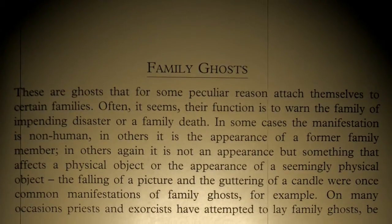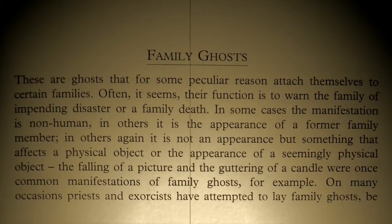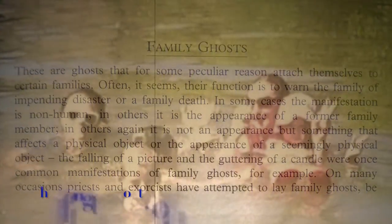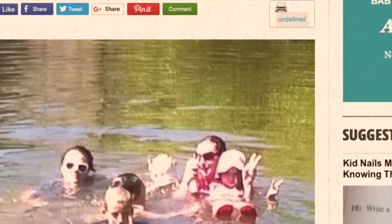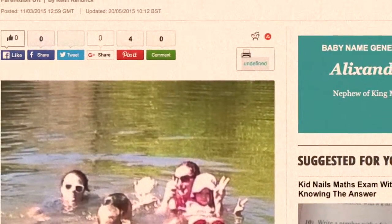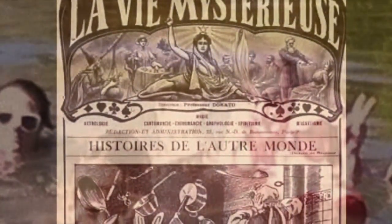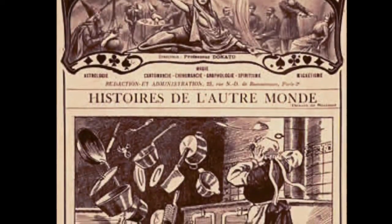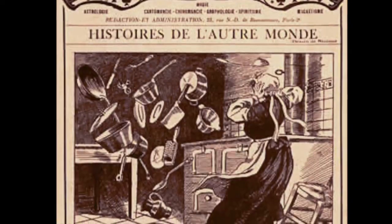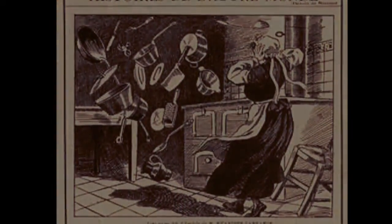Category 4 is the family ghost — something a lot of people can experience in modern day. It's the appearance of a former family member or a ghost that attaches itself to a certain family. Sometimes its function is to warn the family of an impending disaster or even a family death. In some cases the manifestation is non-human, and in others the former family member makes himself known through manipulation of physical objects rather than actually showing themselves — examples like a picture falling off a wall, a candle relighting itself, radios, or lights turning on or off.